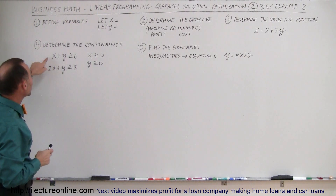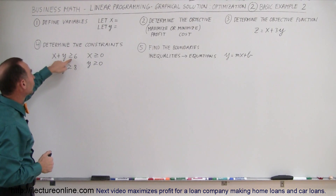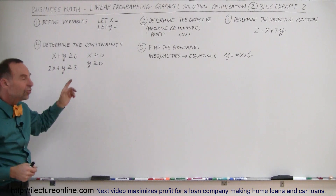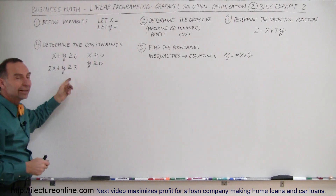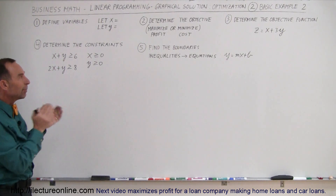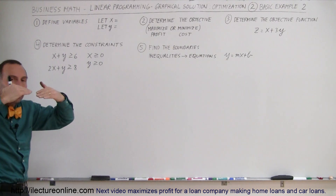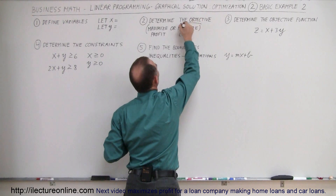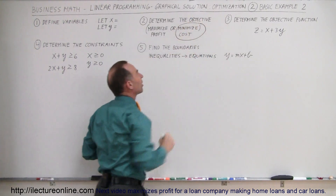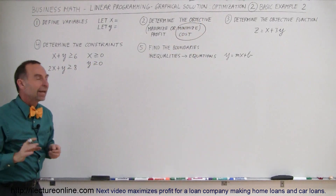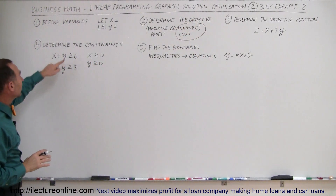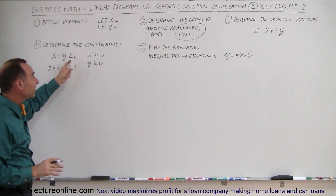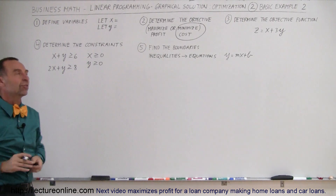Looking at the constraints, x plus y is greater than or equal to 6, and 2x plus y is greater than or equal to 8. When you see greater-than inequality symbols, we're typically trying to minimize something — we want the lowest cost. So in this case, we have an example where we're minimizing the objective function. If the inequalities were less than, we'd typically be trying to maximize something.